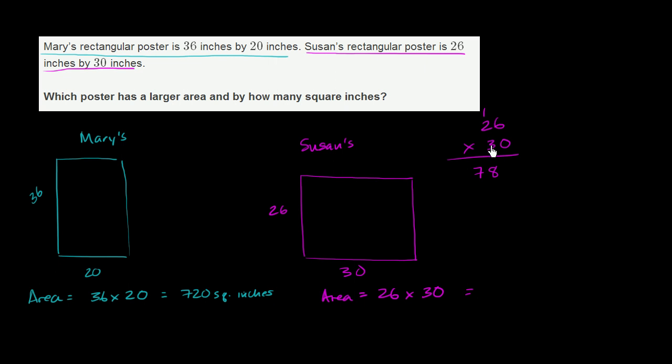But this isn't 3 times 26. 3 times 26 would be 78. 30 times 26 is 780, so it's 780 square inches.